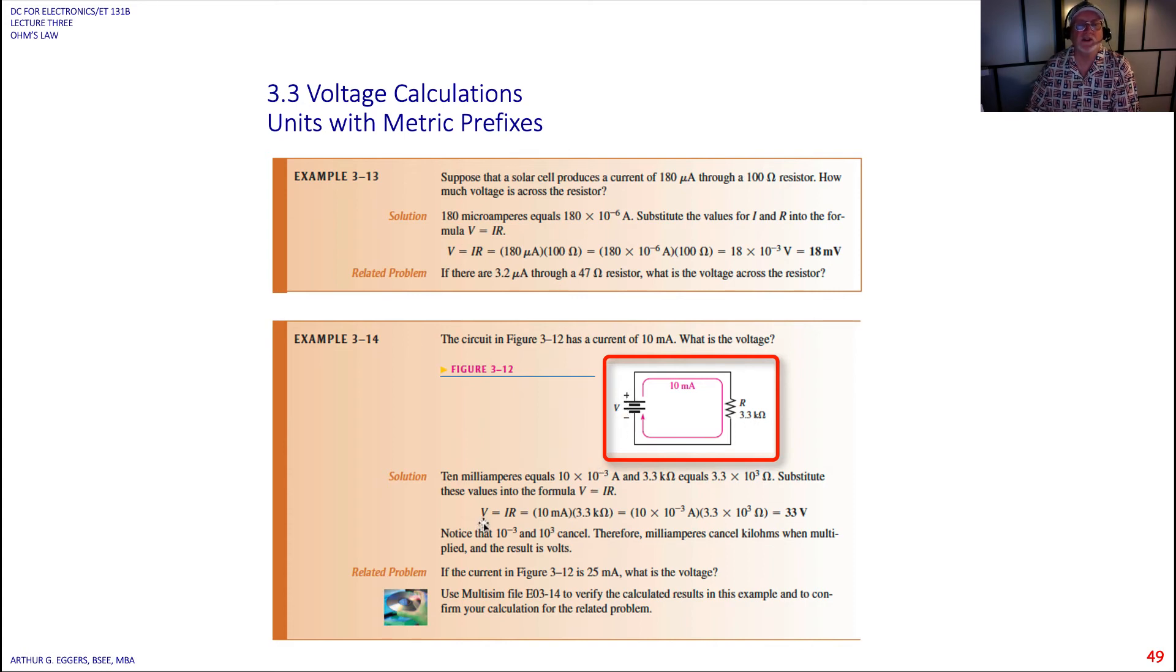Again, we rely on the relationship for Ohm's law, V equals I times R, 10 milliamps, 3.3 k. What you should start picking up on really now a lot is that milli, 10 to the minus third, k, 10 to the third, they're going to cancel out.